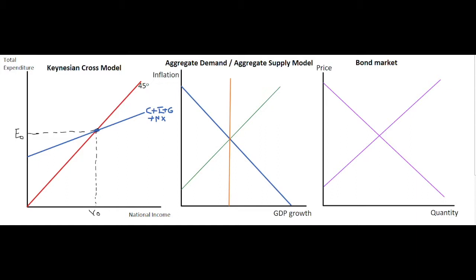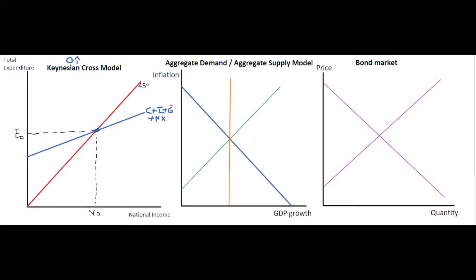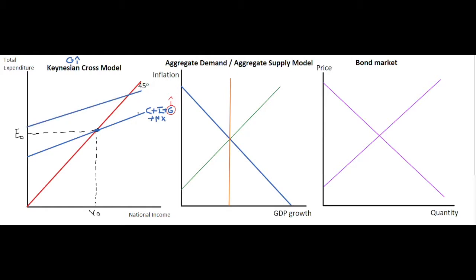The equilibrium point shows us where the economy is in terms of spending and national income. In this situation we have an equilibrium point at E0 and Y0. We are going to look at expansionary fiscal policy in the form of government expenditure increasing. If government spending increases, this is part of the E-curve in the Keynesian cross, showing that expenditure in the economy has an impact on general expenditure, and we shift upwards.